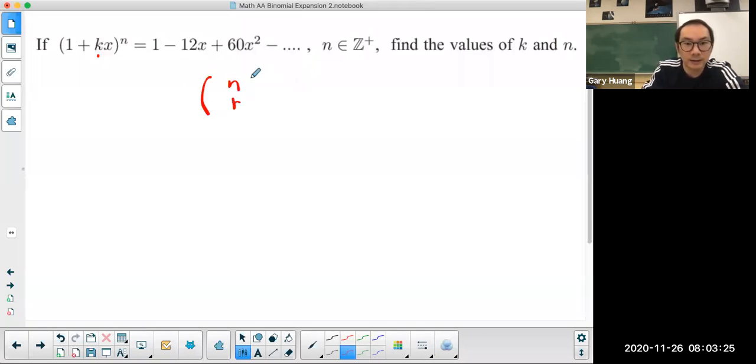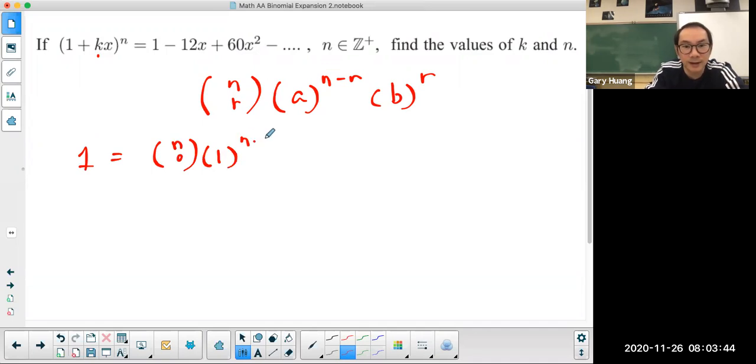Always write out the binomial theorem because that's your key to solving any question here. The first term is going to be n choose 0, times a, which we know, which is 1, to the power of n minus 0, and b, which is kx to the power of 0.